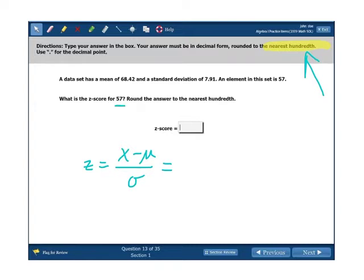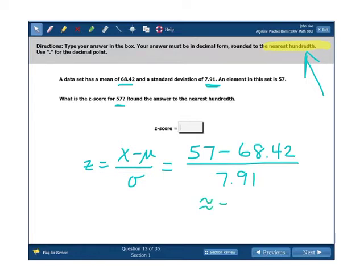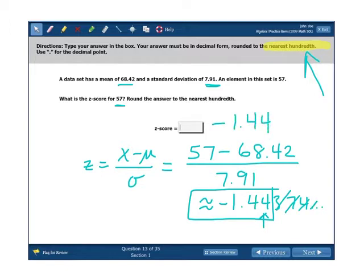Z-score formula is on your formula sheet. It's x minus mu over sigma. x is the value we're finding a z-score for, which is 57. Mu is the mean, which is 68.42. And the standard deviation is sigma, 7.91. From there, it's just a question of doing the math correctly. And I like to do the subtraction and then hit enter and then divide, and that way I can avoid making a mistake. I'm getting negative 1.44374, et cetera. We want to round to the nearest hundredth. Since 3 is smaller than 5, we don't need to worry about it. We're just going to drop it. Negative 1.44 is the answer you should have had for that question.